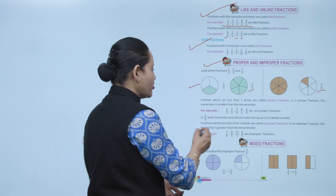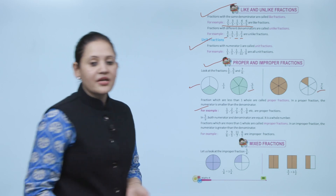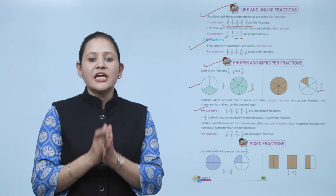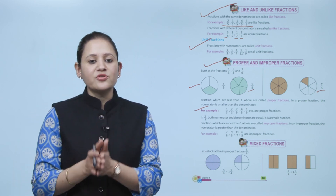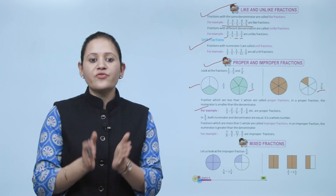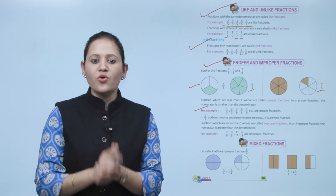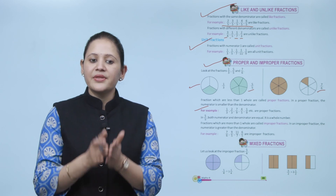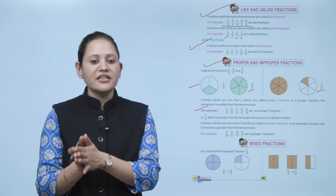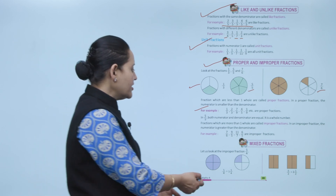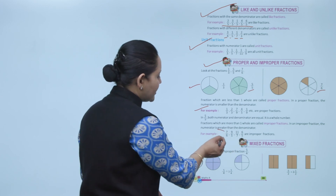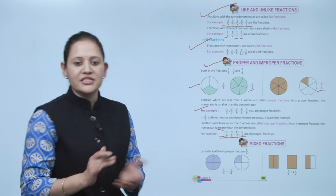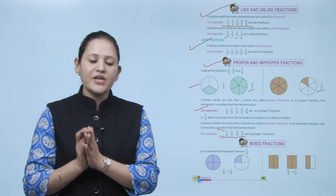In 5 by 5, both numerator and denominator are equal — it equals a whole number. Fractions which are more than 1 whole are called improper fractions. In an improper fraction, the numerator is always greater than the denominator. So fractions where numerator is greater than denominator are all improper fractions. Next is mixed fractions.